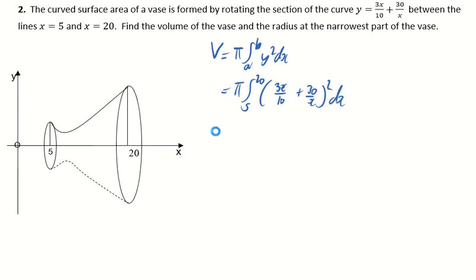Okay, so a bit of work to do before we actually get integrating. So if we do this out and tidy up, we will get 9x squared over 100 plus 180 divided by 10, and that's going to be 18,